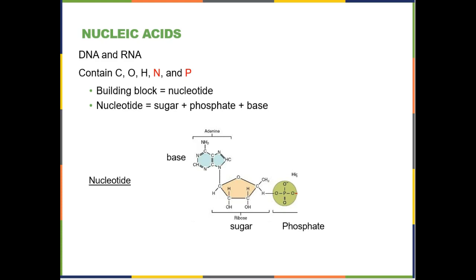Next up is nucleic acids. We think of the nucleotide as the basic building block of a nucleic acid. A nucleotide contains a sugar, a phosphate, and a base. Adenine monophosphate is one example of a mononucleotide. If you see something that looks like that on the exam, you want to be able to identify it as a nucleotide.